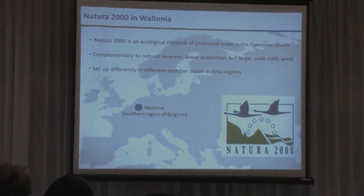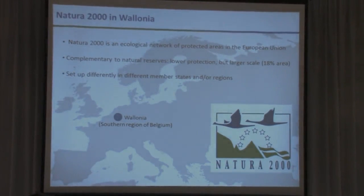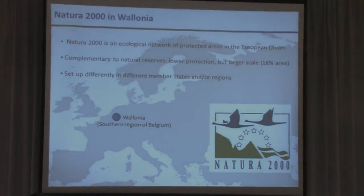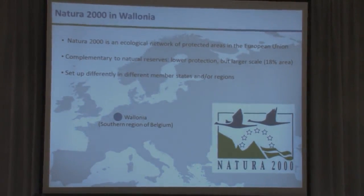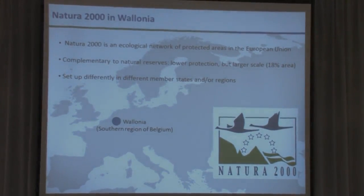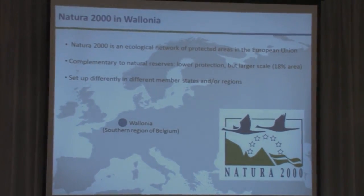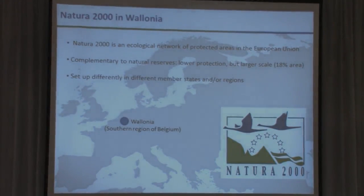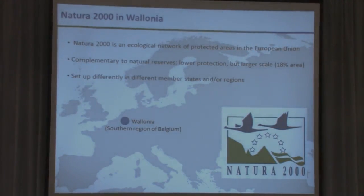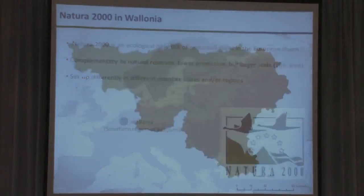As most of you probably know, Natura 2000 is a big network across Europe with a rather low protection level but a high scale. It has been set up differently in the different states because it's based on the European directive. And in Belgium, it's the authority of the region, so it was designed at the regional scale.